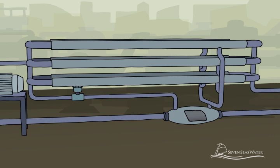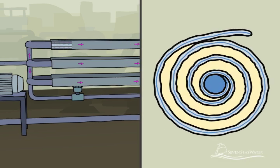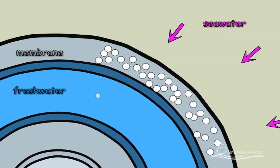As the pressurized seawater enters the pressure vessel and flows across the membrane surface, the water molecules are forced into and through the membrane envelopes, leaving the salt molecules behind.